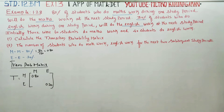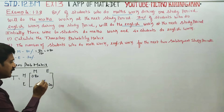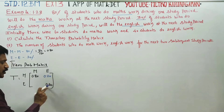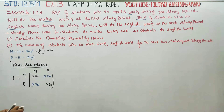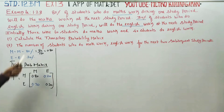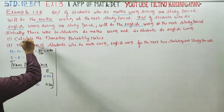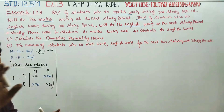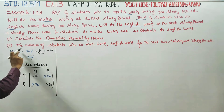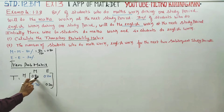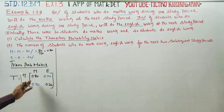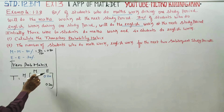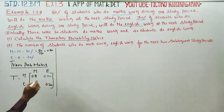Total probability must equal 1. So Maths-to-Maths is 0.80, meaning Maths-to-English is 0.20. English-to-English is 0.30, meaning English-to-Maths is 0.70. We are ready to calculate the Transition Probability Matrix, one step at a time.